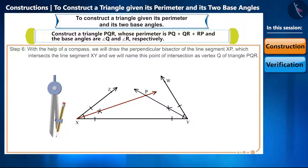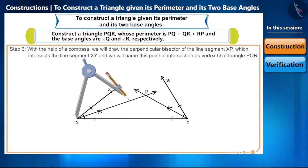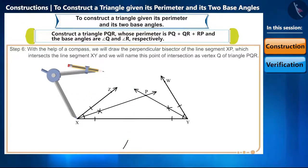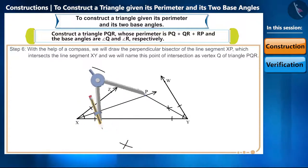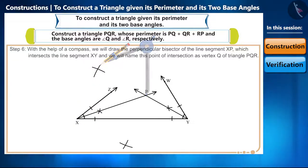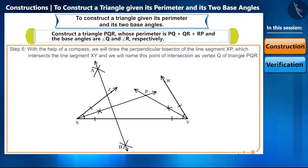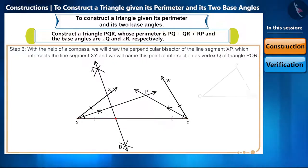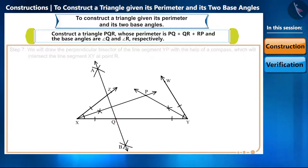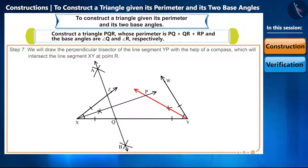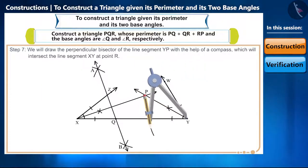Step 6: now with the help of a compass we will draw the perpendicular bisector of line segment XP, which intersects line segment XY, and we will name this point of intersection as vertex Q of triangle PQR.